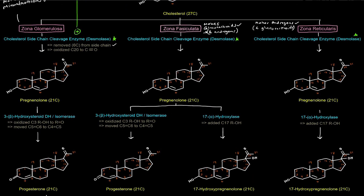The next steroid is progesterone. Going from pregnenolone to progesterone is catalyzed by 3β-hydroxysteroid dehydrogenase isomerase, sometimes called the 4,5-isomerase. Carbon number three has a hydroxyl group that gets oxidized — that's the dehydrogenase part. Then the double bond between carbons 5 and 6 is moved to be between carbons 4 and 5 — hence the 4,5-isomerase. So basically, the C3 alcohol is turned into a carbonyl and the double bond is moved from between 5 and 6 to 4 and 5. Now we have progesterone.